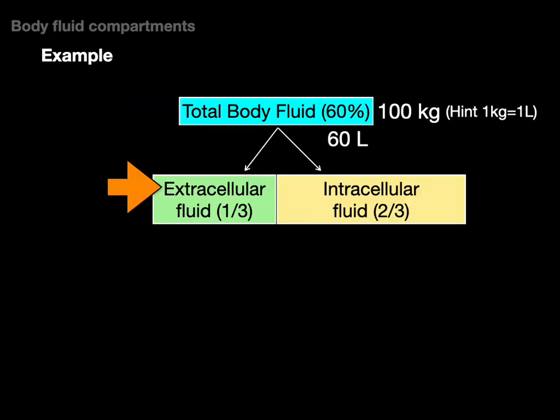Now, remember that total body fluid is extracellular and intracellular fluid. So what is one third of 60 liters? It's 20 liters. And what's two thirds? It's 40 liters.